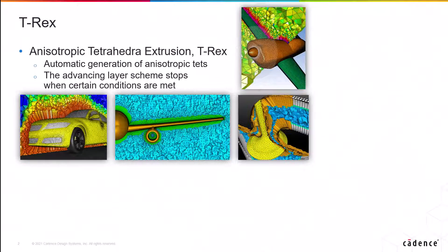The anisotropic tetrahedra extrusion, or T-Rex, is an advancing layer algorithm for automatically generating layers of anisotropic tets that are suitable for resolving high-gradient fluid regions such as those we see in the boundary layers.